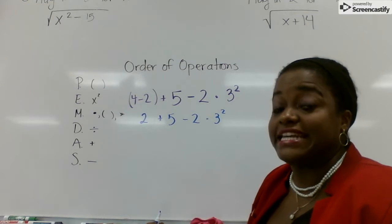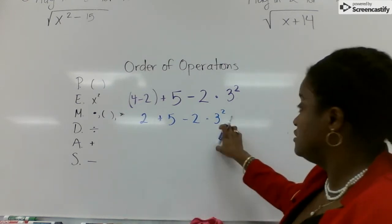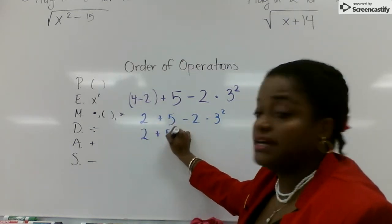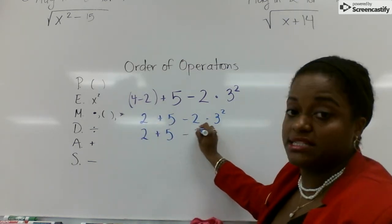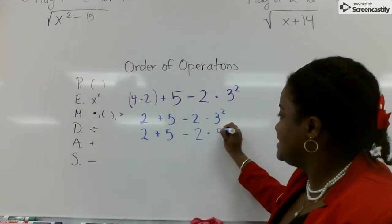Our next letter is E. E is for exponents, which means we're going to deal with the 3 squared. 2 stays the same. 5 stays the same. Minus 2 stays the same. 3 squared is 9.